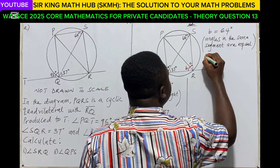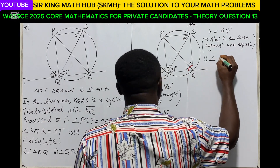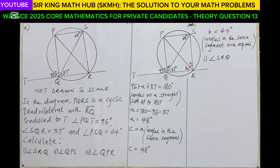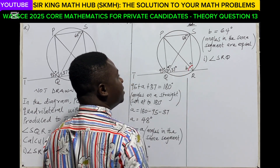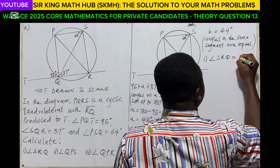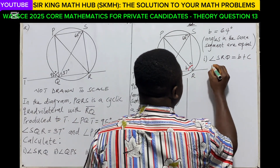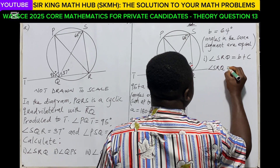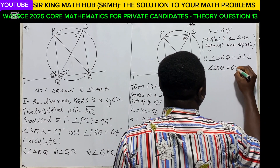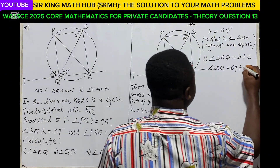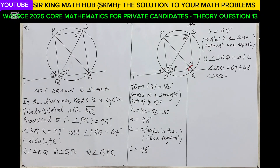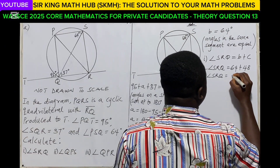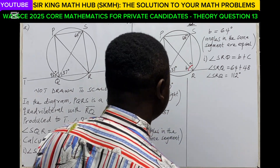With this, can we calculate angle SRQ? Yes, we can, because angle SRQ is the sum of angle B and angle C. So angle SRQ equals B plus C, which is 64 degrees plus 48 degrees. Therefore, angle SRQ equals 112 degrees. That is the answer for part i.